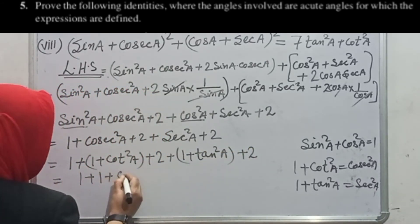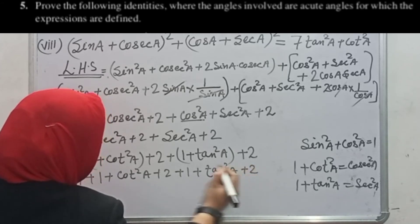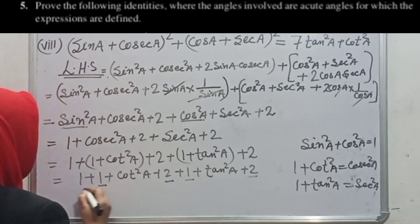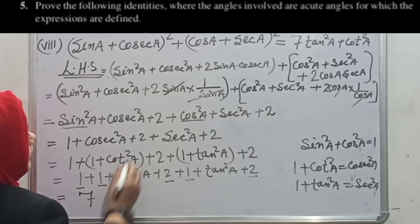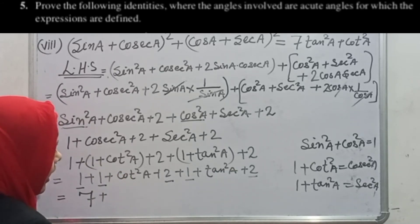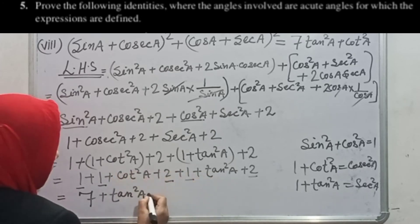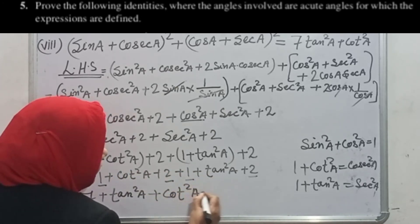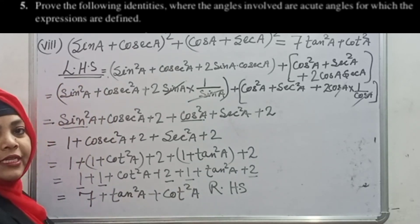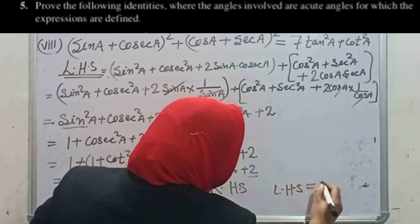Now adding all the constants: 1 + 1 + 1 + 2 + 2 = 7. So we get 7 + tan²A + cot²A. And this is exactly our RHS — 7 + tan²A + cot²A. Hence LHS equals RHS, proof complete.